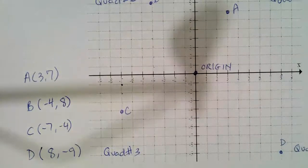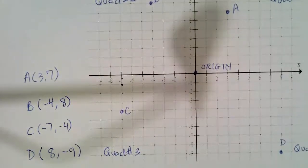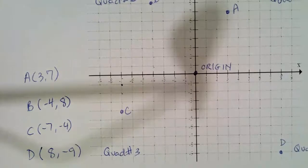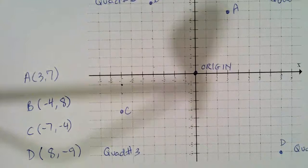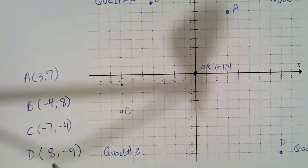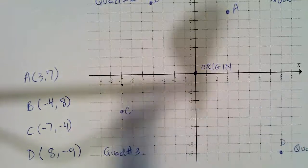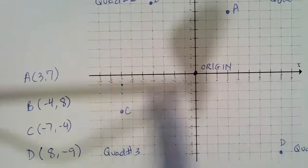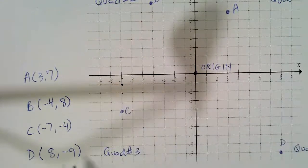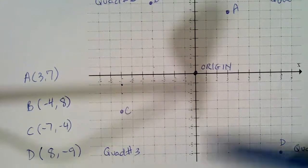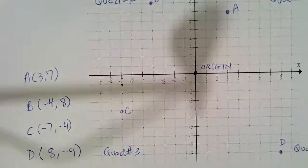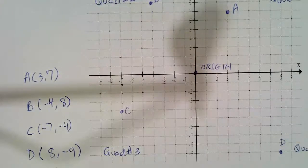And that is graphing points or ordered pairs on the Cartesian grid. What you have to remember is that the first number always represents the X coordinate, which is your X axis, so moving left and right. And the second number is your Y value, which is your vertical up and down. And it's always going to be that way.